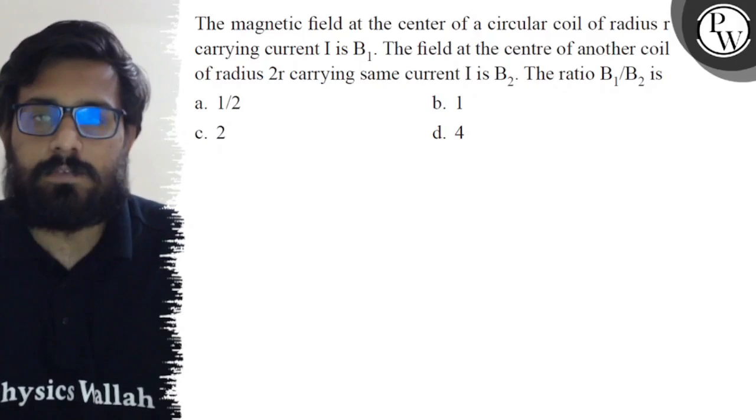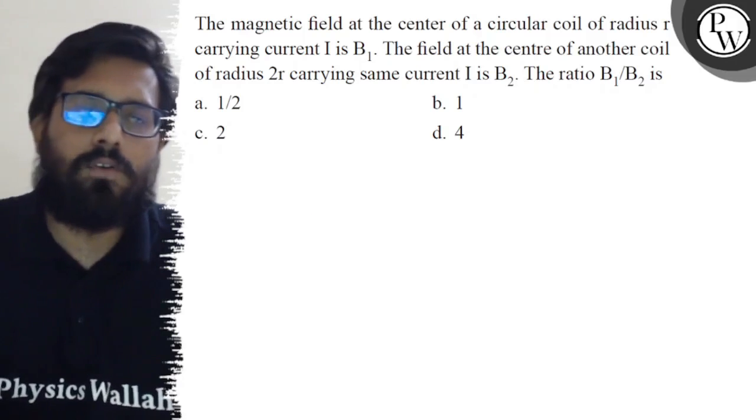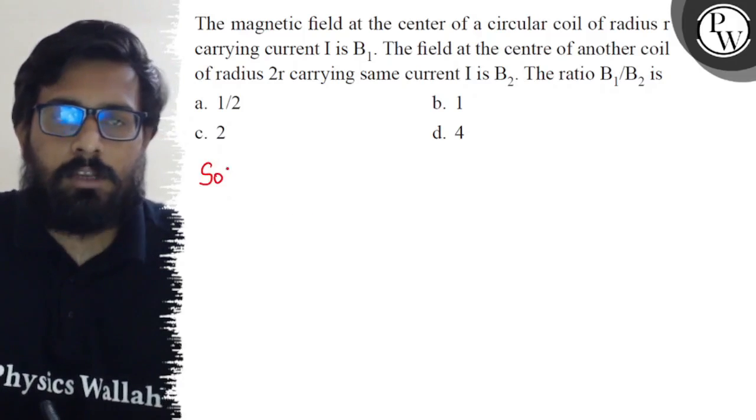Second option is 1, third option is 2, and fourth option is 4. So here in this question, magnetic